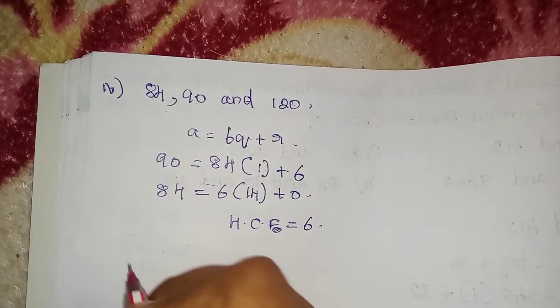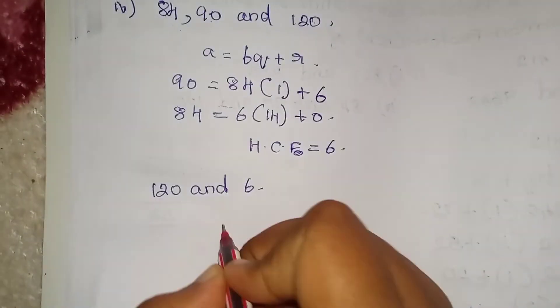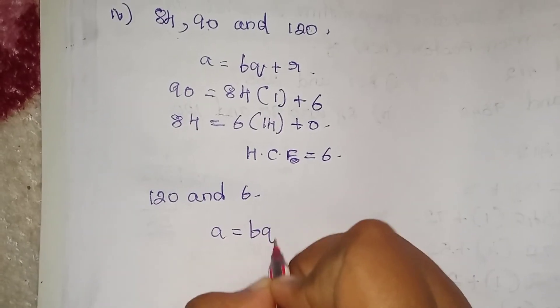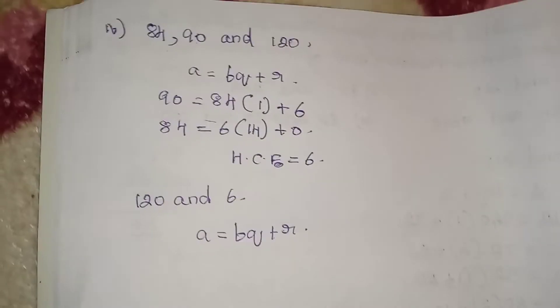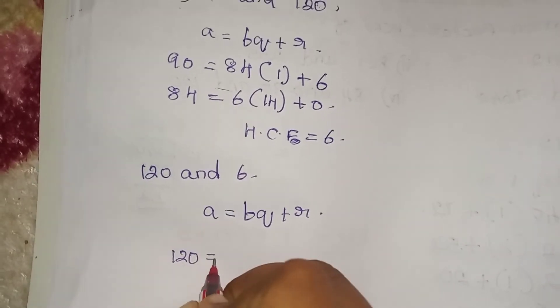Now let's do 120 and 6. A is equal to... 120 is a, 6 is b.